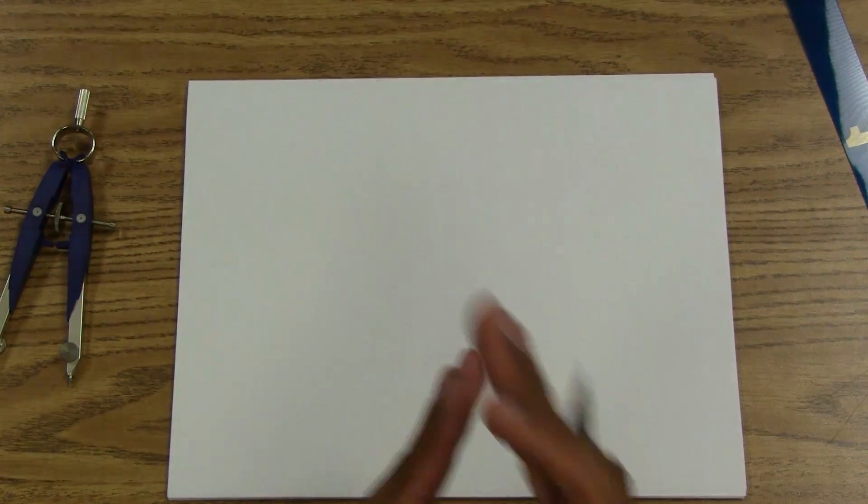Today in geometry, let's look at constructing points of concurrency. Remember, concurrency means where three or more lines meet at one point. So it's a point of concurrency.